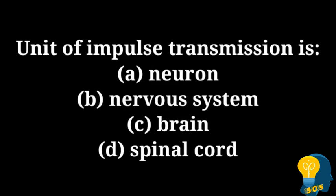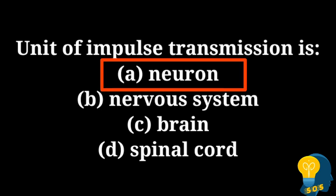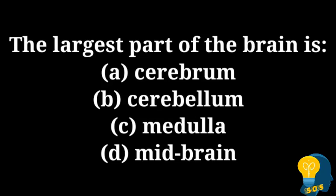The next question is: the unit of impulse transmission is? The options are option A: neuron, option B: nervous system, option C: brain, and option D: spinal cord. The correct answer is option A: neuron. Neurons are nothing but nerve cells, and nerve cells carry the nerve impulses, so the correct answer is neuron.